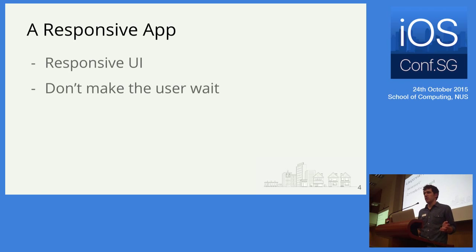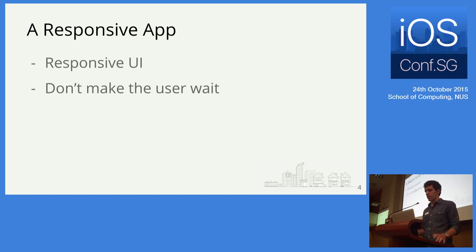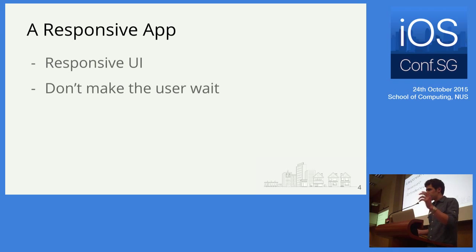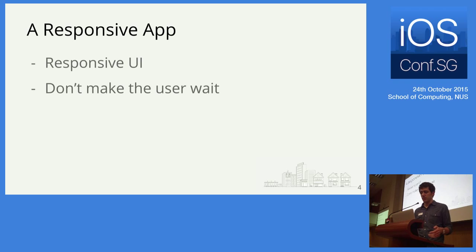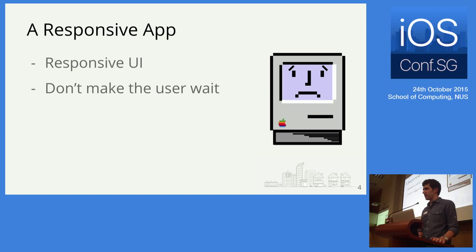I wanted to talk about GCD today because it's a really useful tool to help keep your app responsive. By a responsive app, I mean two things. First, you should have a responsive UI — when a user taps on a button, your app should respond almost immediately. And second, you should avoid making the user wait — take as little time as possible to get the user their result. Do those two things, and you'll have a responsive app and avoid having a sad app.